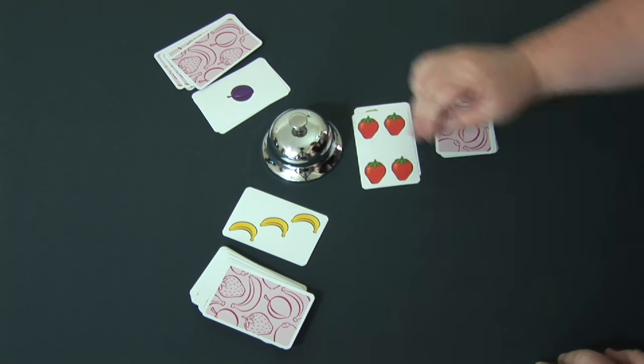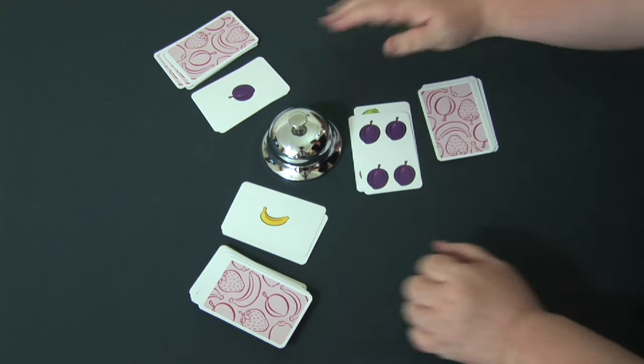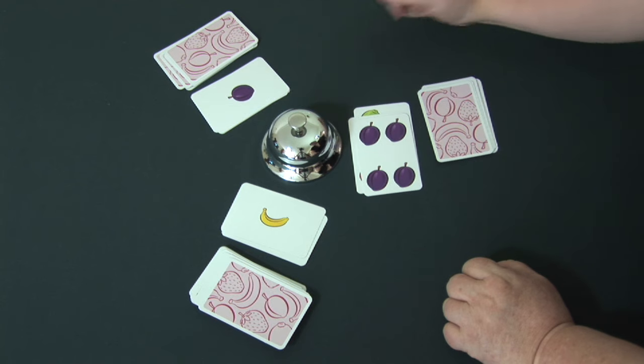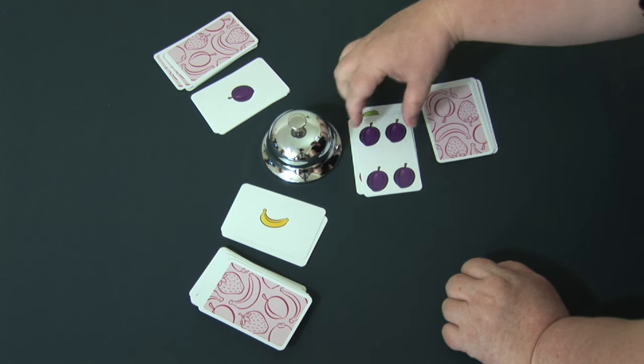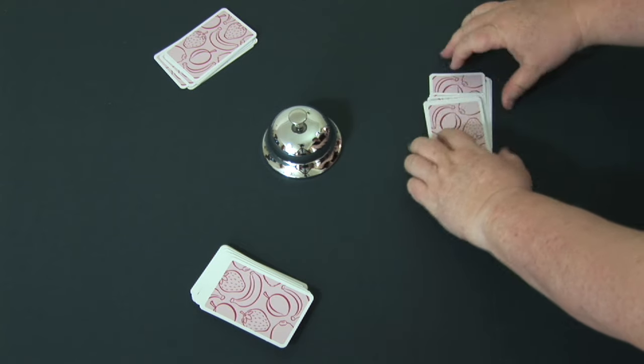It doesn't have to be on one card. It could be across multiple cards. It has to be five of the same type of fruit. Four plus one is five. The person who gets it takes the cards and puts them under their pile.